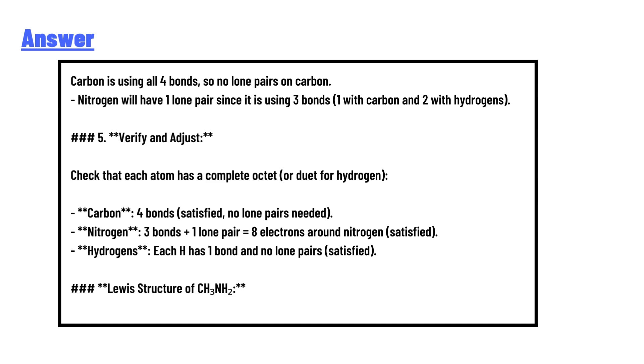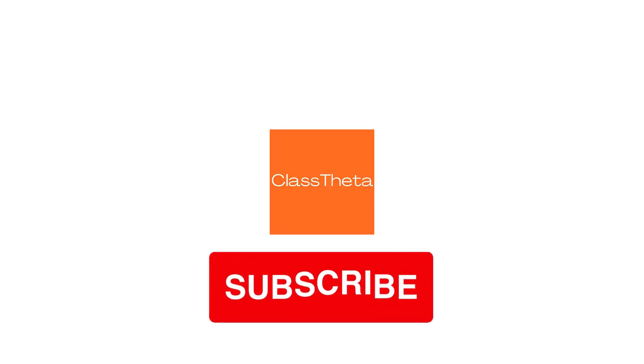The Lewis structure can also be drawn as H3C-NH2 with the lone pair on nitrogen. This is the correct answer.